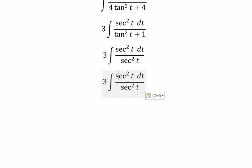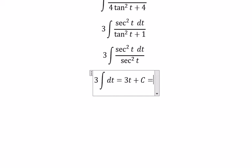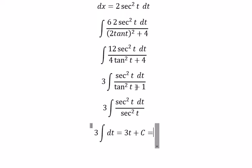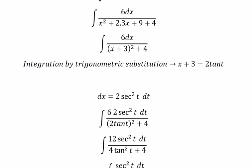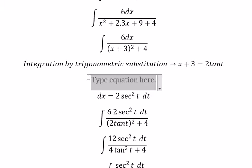And now we just have dt and we got 3t plus C. For t, we need to change back for x. So you got t equals arctan, so we divide both sides by number 2 and you got x plus 3 over 2.